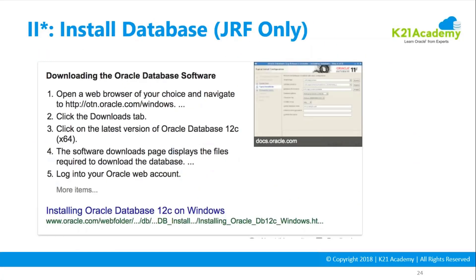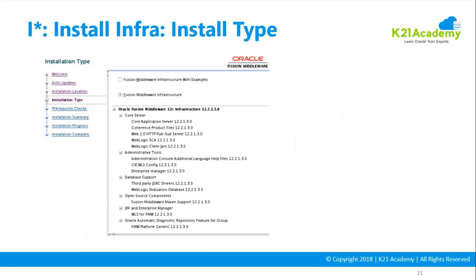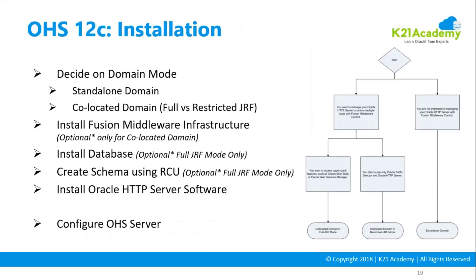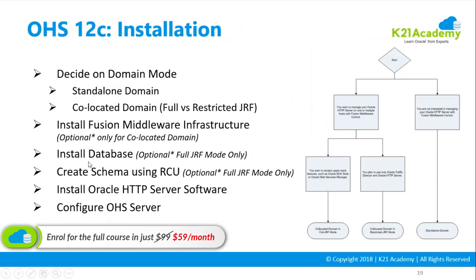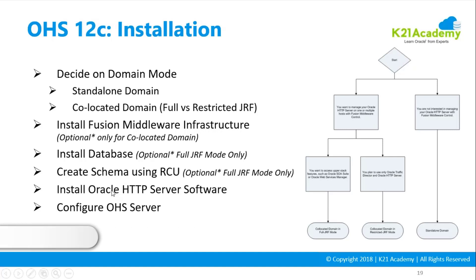Going back to the high-level steps of installation in 12c — if you've decided to go with a standalone domain mode, skip the first part which is installing Fusion Middleware, skip the database installation, and skip the schema RCU part. All you need to do is install Oracle HTTP Server — let me quickly explain what that involves.